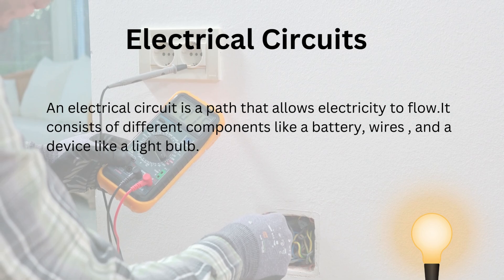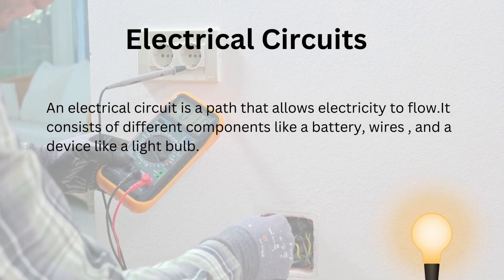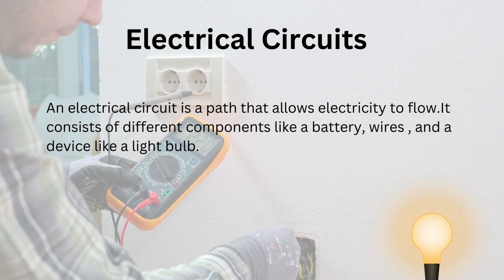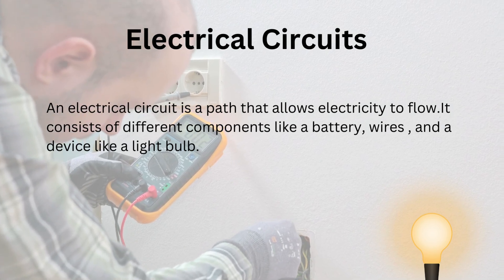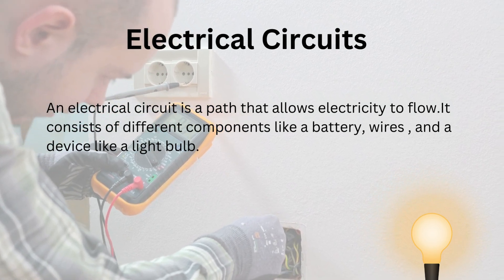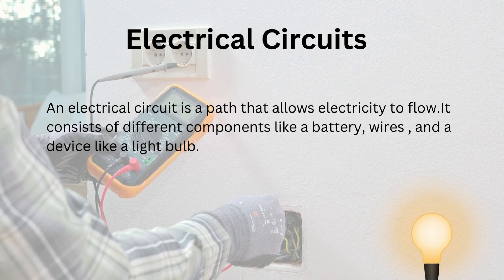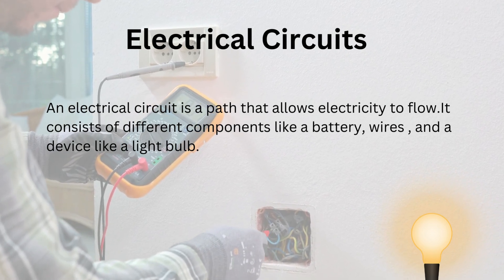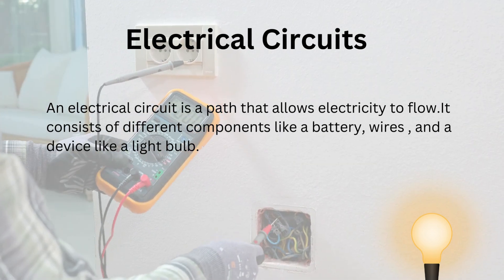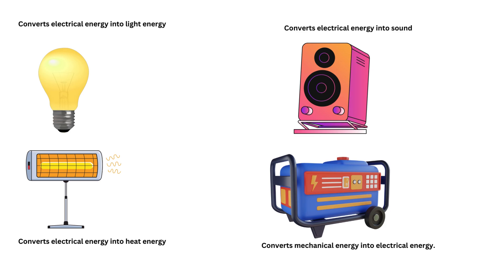What is an electrical circuit? An electrical circuit is a path that allows electricity to flow. It consists of different components like a battery, wires, and a device like a light bulb. In our daily lives, we depend on various electrical devices to do work for us.